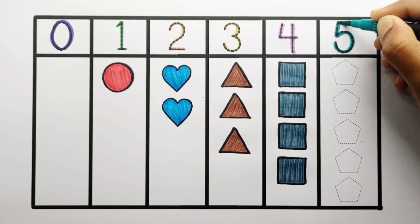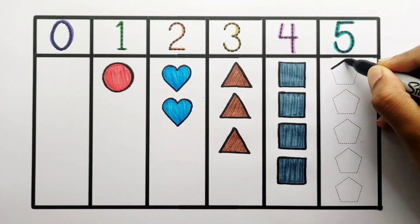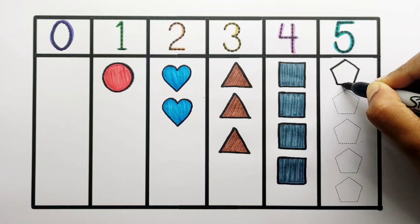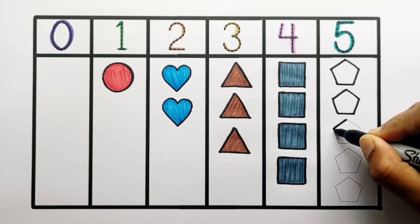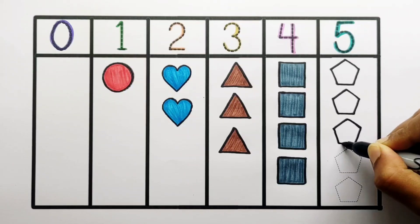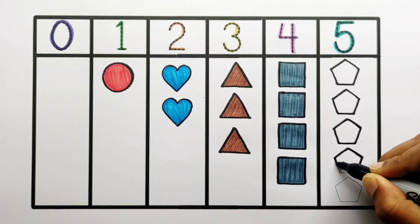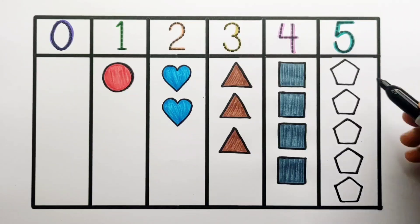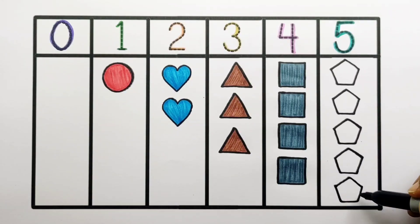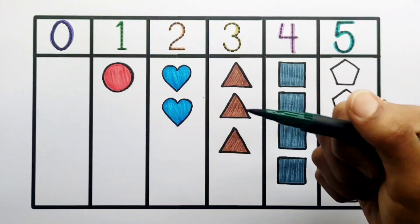Number 5: 1, 2, 3, 4, 5, five pentagons, green color.